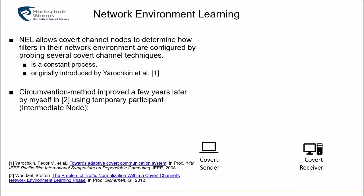Next idea — and this is very important: Network Environment Learning, or NEL. A NEL allows a covert channel node to determine how filters in the network environment are configured by probing several covert channel techniques. If a covert sender wants to send data to a receiver, there may be a filter, traffic normalizer, or firewall in between that drops covert channel packets. The sender and receiver want to know which packets are dropped and which are not.